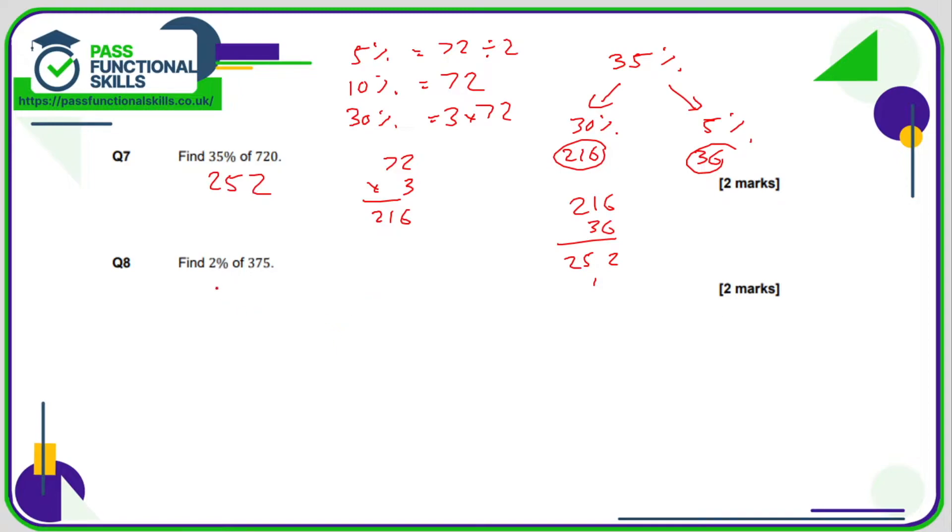Question number 8, 2% is probably easier to work out if we work out what 1%. Now remember that percent means out of 100. So 1% means 1 out of 100, one hundredth. So first of all, what is one hundredth of 375? Well, that's 375 divided by 100, which is 3.75.